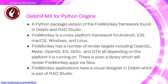The origins of Delphi FMX: it comes from the FireMonkey library found in Delphi and RAD Studio. Delphi FMX is the Python package that wraps up that library to make it available to Python. FireMonkey is a cross-platform framework for Android, iOS, Mac OS, Windows, and Linux. It has rendering targets including OpenGL, Metal, OpenGL ES, GDI+, and GTK depending on the platform. There's even a library that allows you to render FireMonkey apps via Skia, and FireMonkey applications have a visual designer in Delphi, which is also part of RAD Studio.